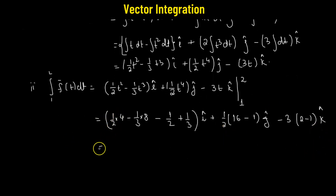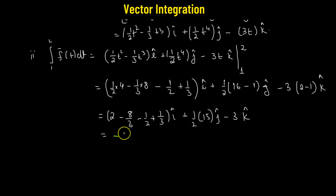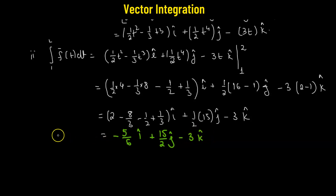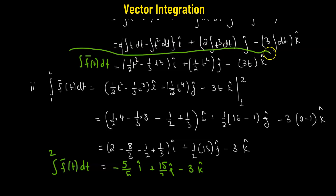Simplifying the i-cap component: 2 minus 8/3 minus 1/2 plus 1/3, which gives negative 5/6. The j-cap component simplifies to (1/2)(15) giving 15/2. The k-cap component is negative 3. So the definite integral from 1 to 2 of f(t) dt equals negative (5/6) i-cap plus (15/2) j-cap minus 3k-cap. The indefinite integral is (1/2)t squared minus (1/3)t cubed i-cap plus (1/2)t to the fourth j-cap minus 3t k-cap.